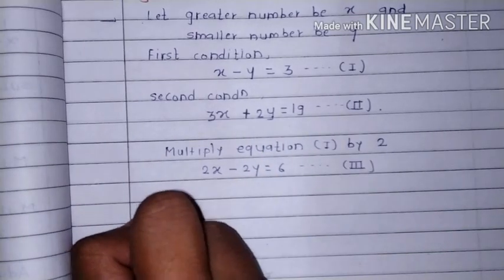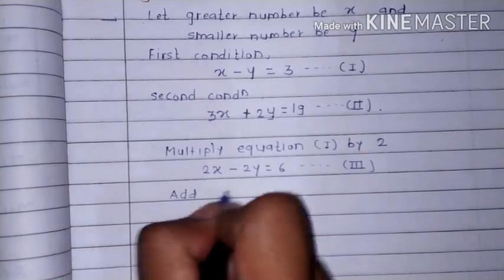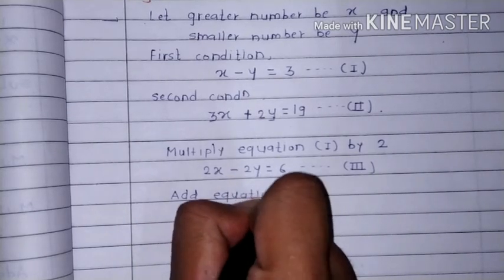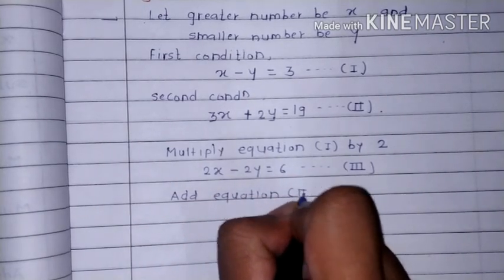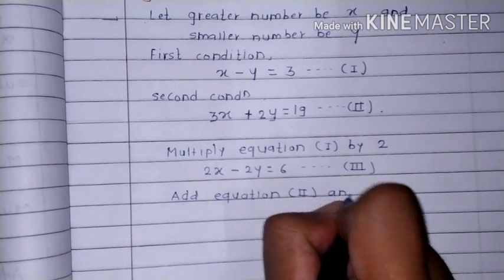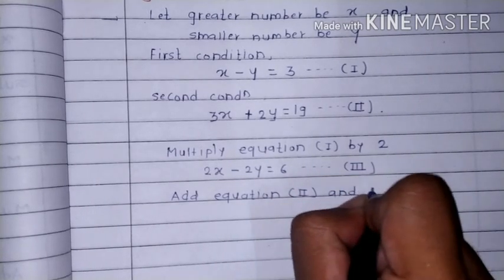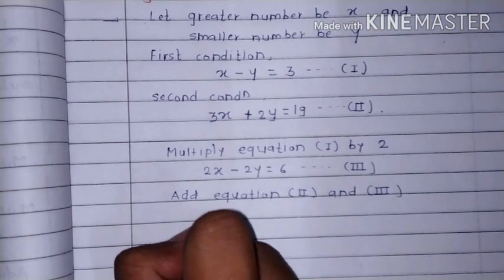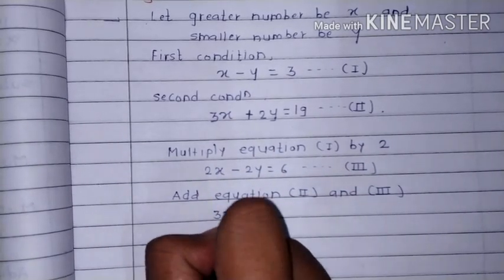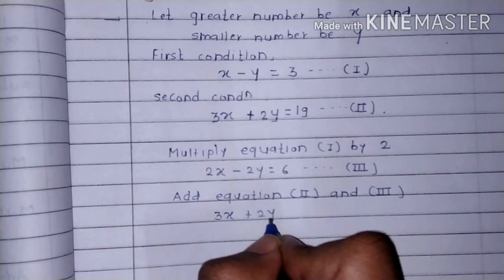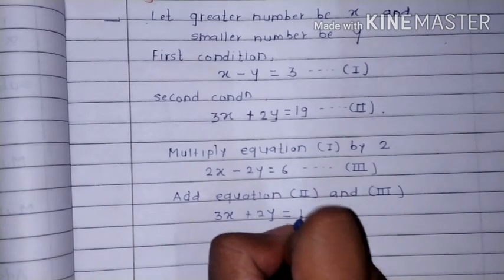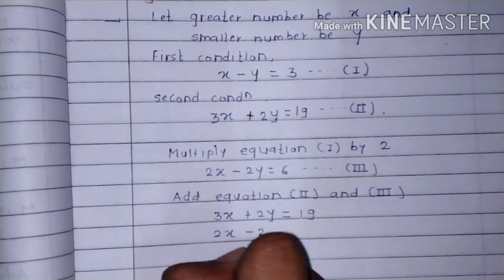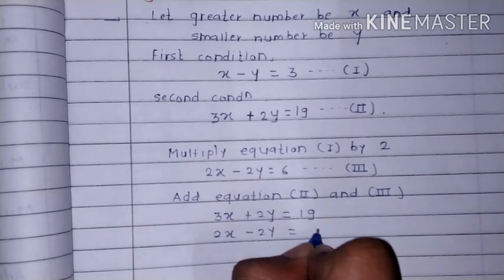Add equation 2 and equation 3. That is 3x plus 2y equal to 19, and 2x minus 2y is equal to 6.